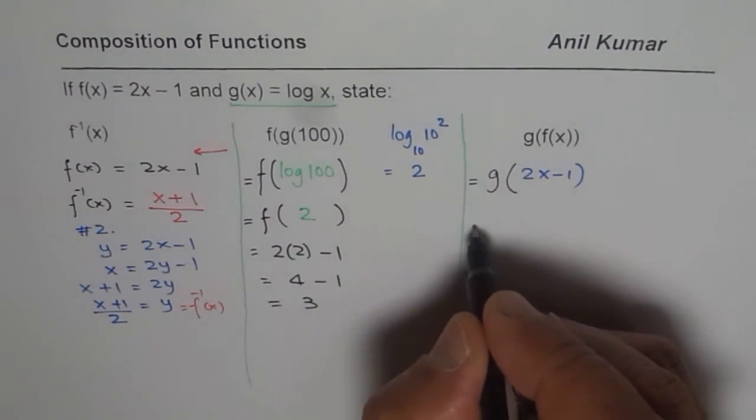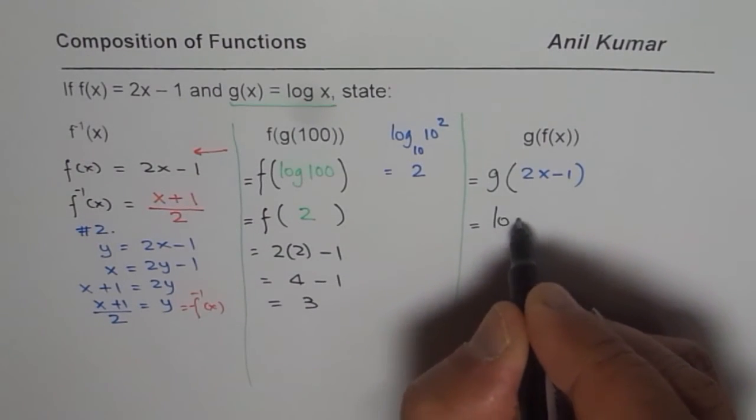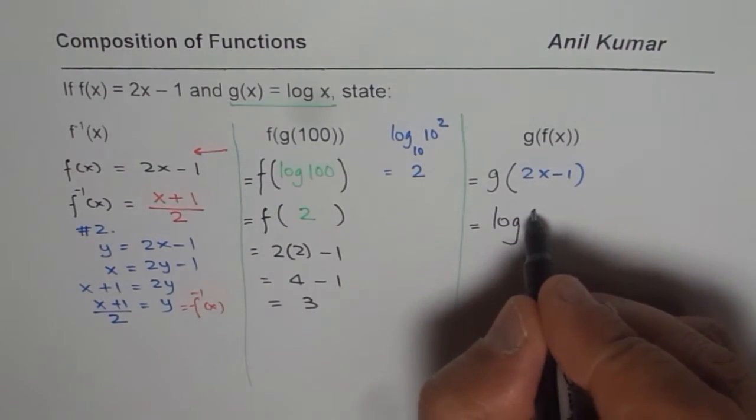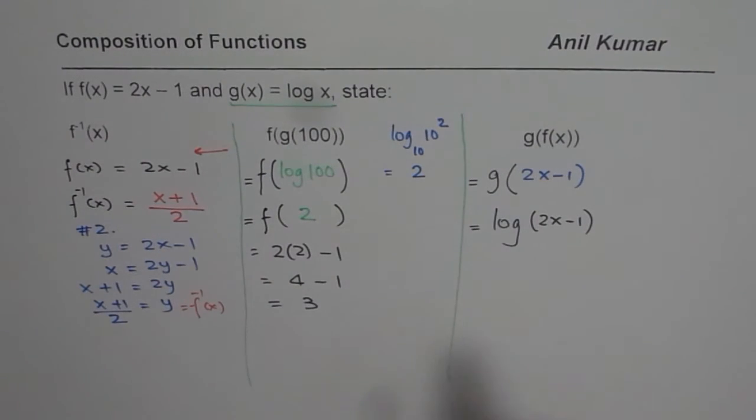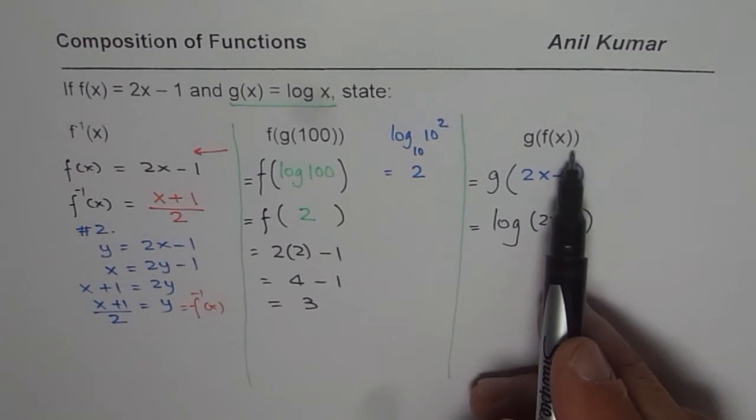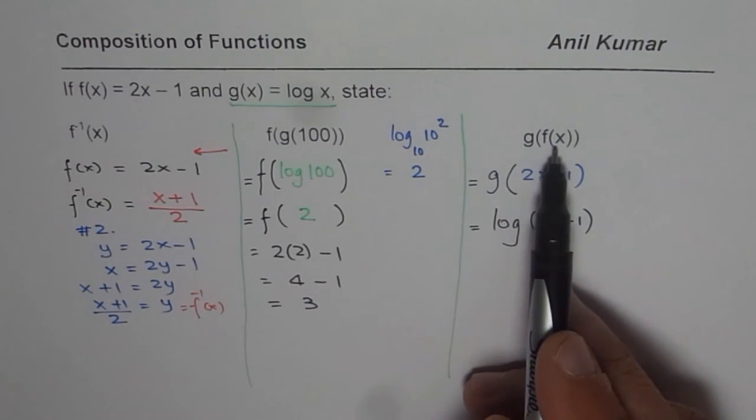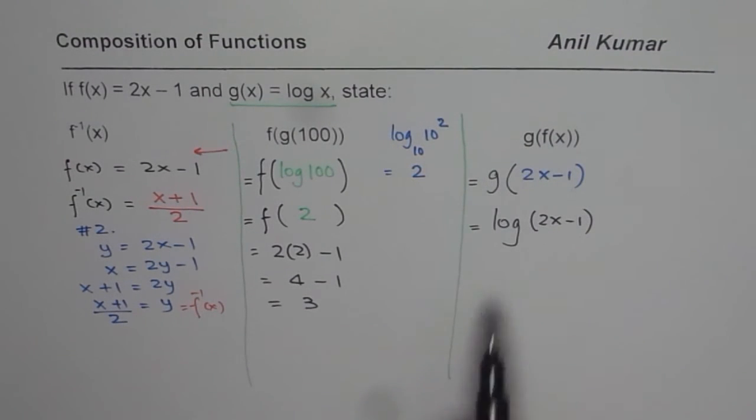Now we can write this as equals to log of... Instead of x, I will write 2x minus 1. That is our result. That is how we can do composition of f of x followed by g of x. And that is what we mean composition of these functions.